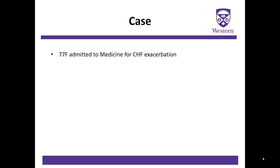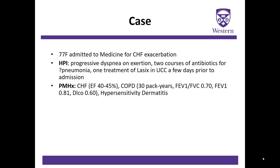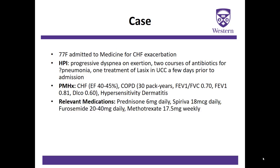This case involves a 77-year-old female admitted to the medicine ward with a CHF exacerbation. Her history includes progressive dyspnea on exertion, two courses of antibiotics for possible pneumonia, and treatment with Lasix at an urgent care center a few days prior to admission. Relevant past medical history includes CHF with reduced ejection fraction, mild COPD, and hypersensitivity dermatitis. The dermatitis is important because her treatment involves chronic prednisone and methotrexate. She is also on a standard long-acting bronchodilator and a home diuretic.